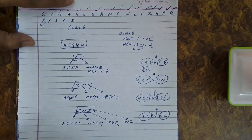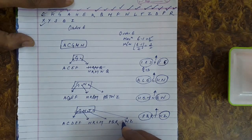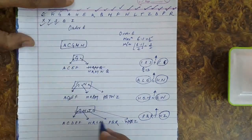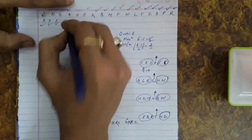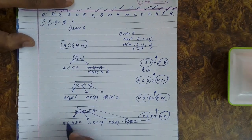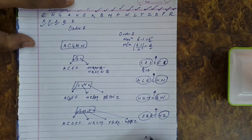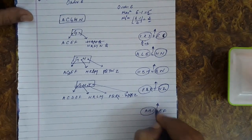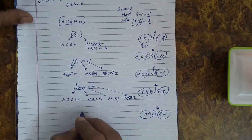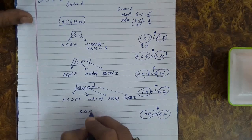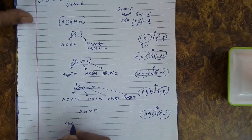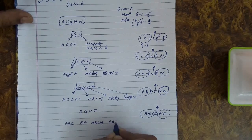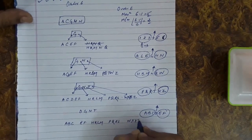X is inserted into the W, Z node, giving W, X, Y, Z after Y is also inserted. S is inserted into the P, Q, R node. Then B is inserted, causing the maximum condition to be violated in the A, B, C, D, E, F node. The median key D is sent upwards, creating a new node A, B, C on the left and E, F on the right. The root becomes D, G, N, T. Remaining nodes H, K, L, M; P, Q, R, S; and W, X, Y, Z remain as such.